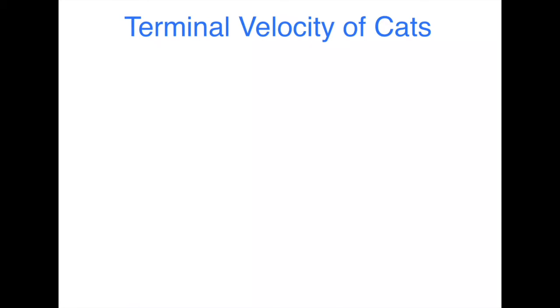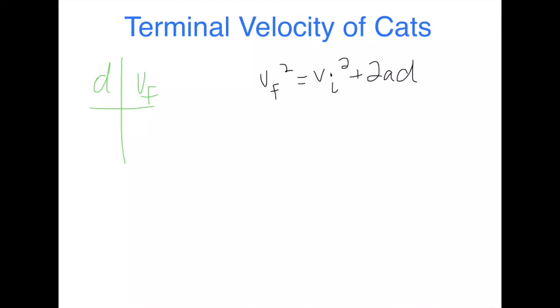In this experiment, we dropped cats at half-meter increments all the way up to six meters and measured what their impact velocity was when they hit the ground. So we have distance and final velocities that we're going to graph. Now what we want to do is look at the equation for the final velocity of an accelerating object. If you remember, that equation is VF² = VI² + 2AD. A in this case is the acceleration rate — it should be gravity. We drop these cats at an initial velocity of zero, so that term goes away, and we get VF² = 2AD.